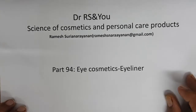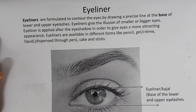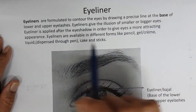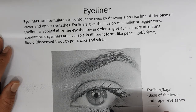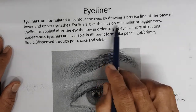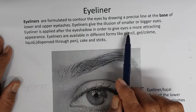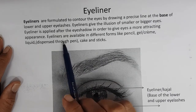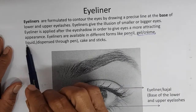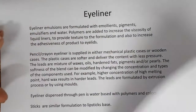Now we are in eye cosmetics eyeliner. I am going to be very brief in this because it's a repetition of many things. Eyeliners are formulated to contour the eyes by drawing a precise line at the base of the lower and the upper eyelashes. Eyeliners give the illusion of smaller or bigger eyes. Eyeliner is applied after the eye shadow in order to give eyes a more attractive appearance. Eyeliners are available in different forms: eyeliner pencil, gel and cream, liquid dispensed through pen, cakes, and sticks.